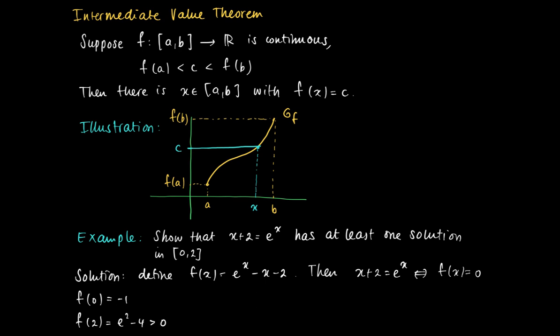So we get the following picture. If we draw the graph, then actually we see that in 0 we have a negative value, in 2 we have a positive value. And we have a continuous function, so the graph does not allow for holes, so there's no jumps in the graph.